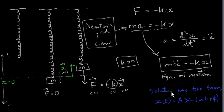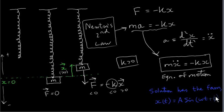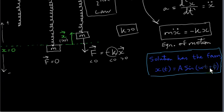The solution of this differential equation has the form x(t) equals A sine of (ωt plus φ). We use the letter omega for the constant — it is the coefficient of t, while A, omega, and phi are all fixed constants. To verify that this is indeed a solution, we are going to plug it into the differential equation and show that it makes sense.